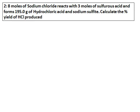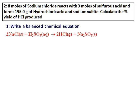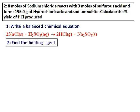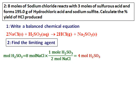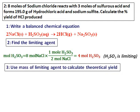One more question: 8 moles of NaCl reacts with 3 moles of H₂SO₃ and gives 195 grams of HCl. Calculate the percentage yield of HCl produced. As always, write a balanced equation first. Then find the limiting agent. Starting with moles of sodium chloride, I find how much moles of sulfurous acid I need. For 8 moles of NaCl I need 4 moles of H₂SO₃ — the ratio is 2:1. I have only 3 moles of sulfurous acid, so I don't have enough, and hence H₂SO₃ is the limiting agent.